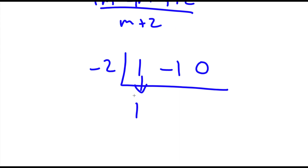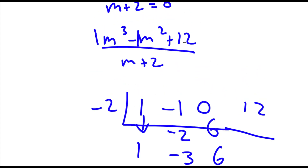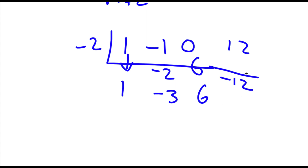I bring down the 1. Negative 2 times 1 is negative 2. Negative 1 plus negative 2 is negative 3. Negative 2 times negative 3 is 6. 0 plus 6 is 6. Negative 2 times 6 is negative 12. And we have 12 at the end here, so 12 plus negative 12 is 0. So the result is m squared minus 3m plus 6.